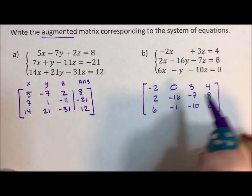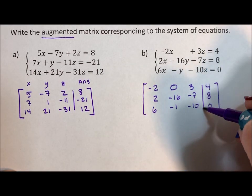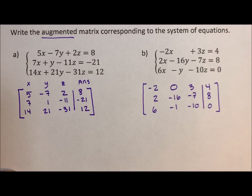So, brackets make it a matrix, and our line makes it an augmented matrix.